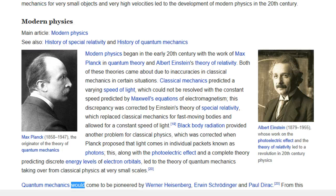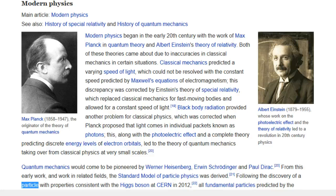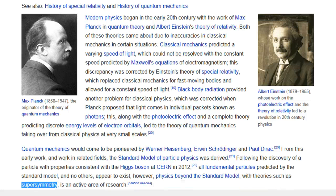Quantum mechanics would come to be pioneered by Werner Heisenberg, Erwin Schrödinger and Paul Dirac. From this early work, and work in related fields, the standard model of particle physics was derived. Following the discovery of a particle with properties consistent with the Higgs boson at CERN in 2012, all fundamental particles predicted by the standard model, and no others, appear to exist. However, physics beyond the standard model, with theories such as supersymmetry, is an active area of research.